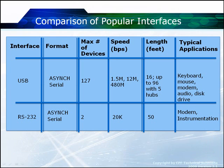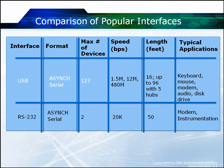Now let's compare some different interfaces. USB is an asynchronous serial protocol. The maximum number of devices is 127. USB uses a 7-bit address field — 2 to the 7 is 128, but address 0 is reserved, leaving 127 possible devices. Obviously that's probably not practically achievable, as you'll see when we cover bandwidth calculations.